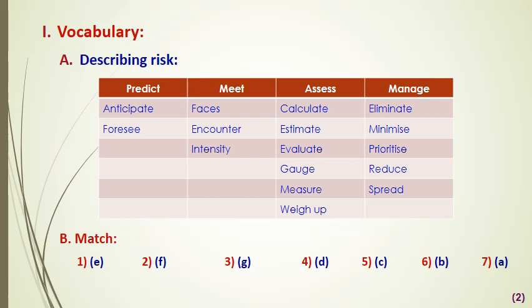As for exercise number B, it asks you to match sentences with their halves from newspaper extracts. I've given you their answers, but we can read them together. Number one goes with letter E: 'During the credit crunch' — crunch means recession — 'many businesses face the risk of running out of money.' Number two goes with letter F: 'We can reduce risk by spreading our lending across more markets.'